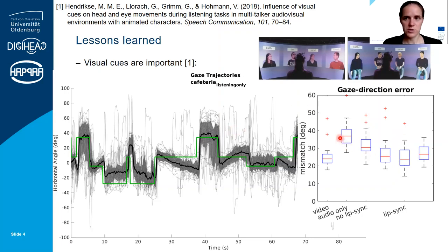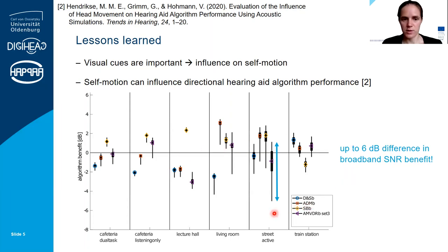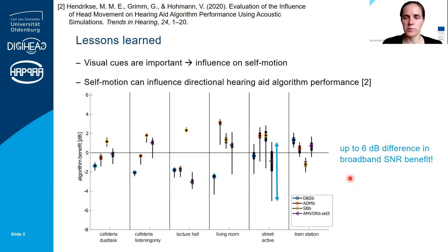We've shown that visual cues can influence self-motion and steer spatial attention towards the direction of the active speaker. We've also shown that self-motion can influence the performance of directional hearing aid algorithms, by estimating the broadband SNR benefits that different algorithms would have provided in these virtual environments. There is a pretty large range over the different self-motion trajectories — participants moving their head one way or another could produce up to a 6 dB difference in broadband SNR benefit of directional algorithms, averaged over the entire duration. At individual time points, this effect would be even larger.